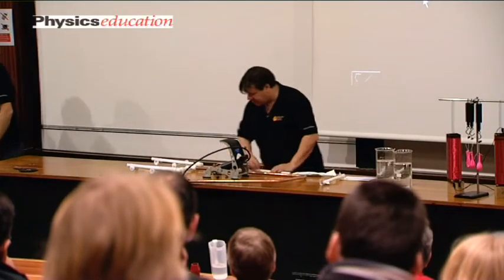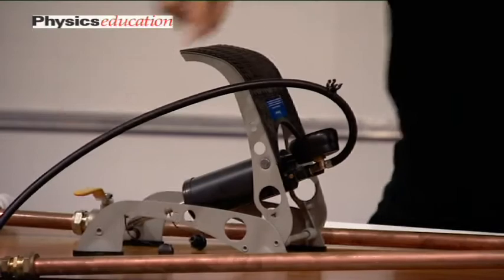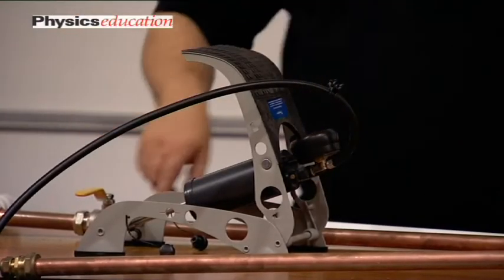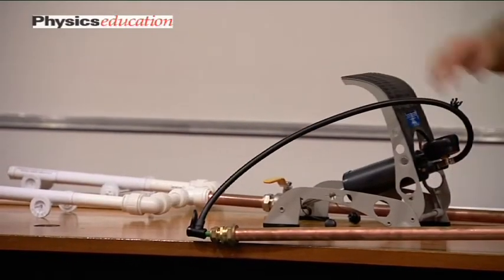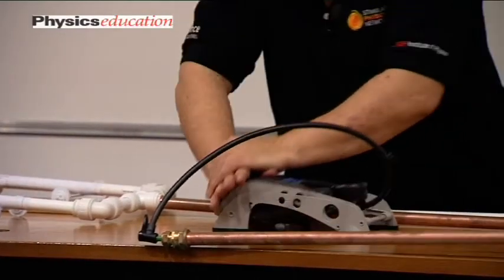So I'll just pump this up to show you how it works. This is a piece of 22 millimetre copper pipe with a car tyre valve at the end. So we pump some air into the tube.